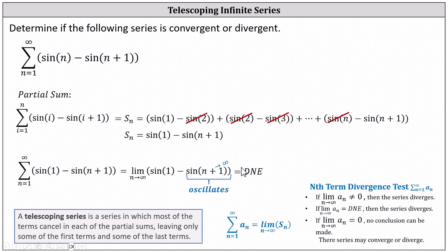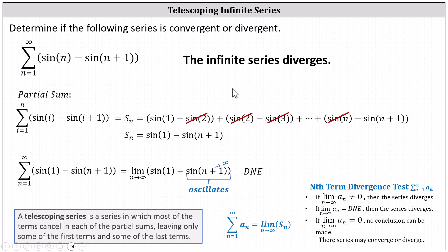Because the limit doesn't exist, we know the original infinite series is divergent. We could have also determined this using the nth term divergence test, shown here below. I hope you found this helpful.